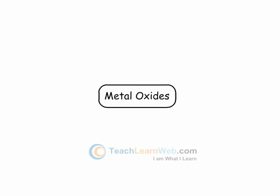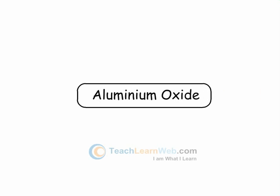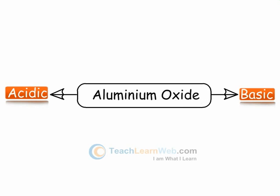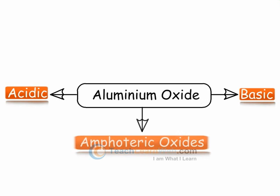Generally, metal oxides are basic in nature. Some metal oxides such as aluminium oxide exhibit both acidic as well as basic behaviour. Such substances are called amphoteric oxides.